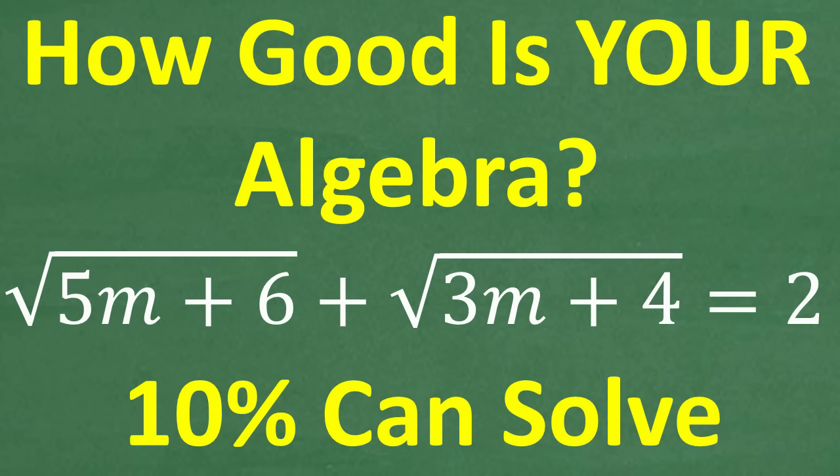This is not a super easy problem — more on the difficult side for sure. We're dealing with square root symbols, which are called radicals, so what we have here is a radical equation. When solving radical equations, there are big-picture concepts to keep in mind, and certain steps that bring up other issues. This is a multi-layer problem, so there's no way to get it correct without knowing a lot about algebra.